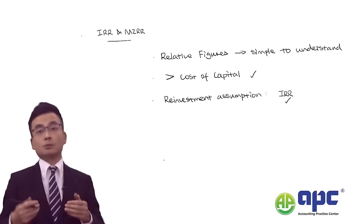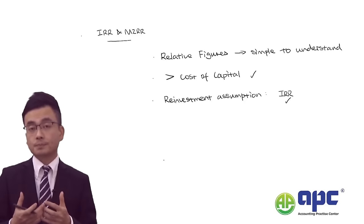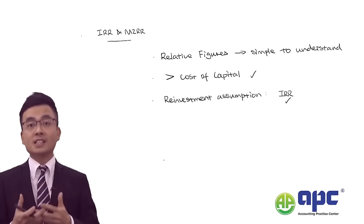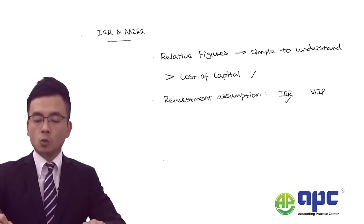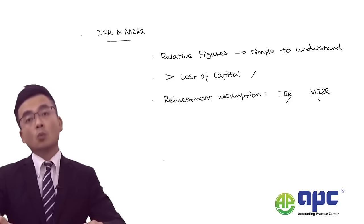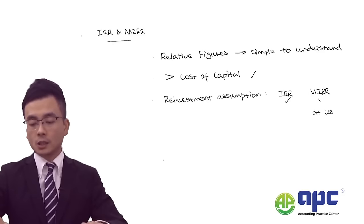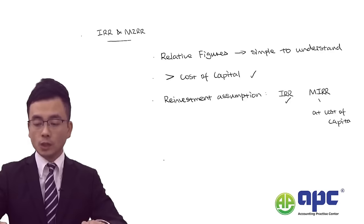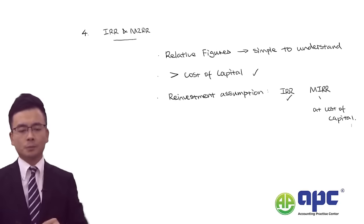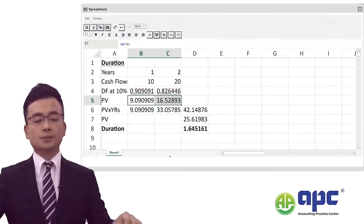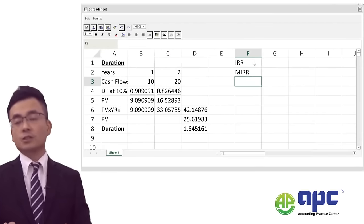IRR assumes cash flows are reinvested at the IRR itself — making IRR effectively the maximum cost of capital to the business, or the real return per year considering time value of money. MIRR assumes cash flows are reinvested at the company's cost of capital in subsequent stages. Always tell the examiner about these reinvestment assumptions.